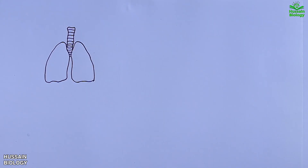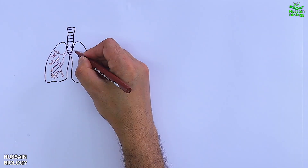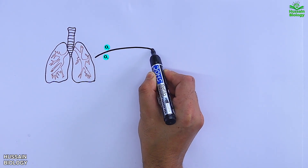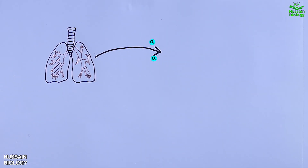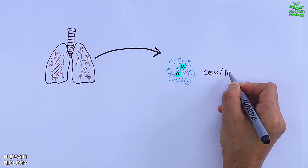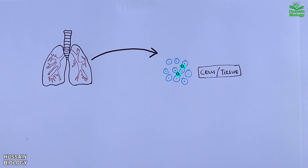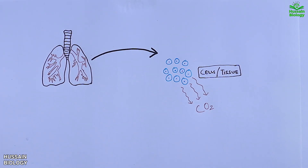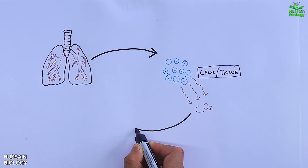Here we have the lungs containing air, or gases. The erythrocytes take out the oxygen from the lungs and deliver this oxygen to cells and tissues as shown in the diagram. After utilizing oxygen, the cells and tissues give up the carbon dioxide, which is then taken up by the RBCs.